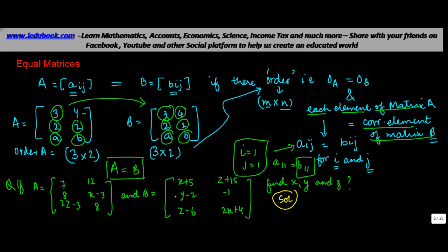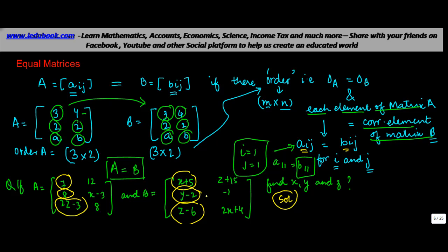If these two matrices are equal, then each corresponding element must also be equal. So each element of A should equal the corresponding element of B, giving us a system of equations to solve for X, Y, and Z.